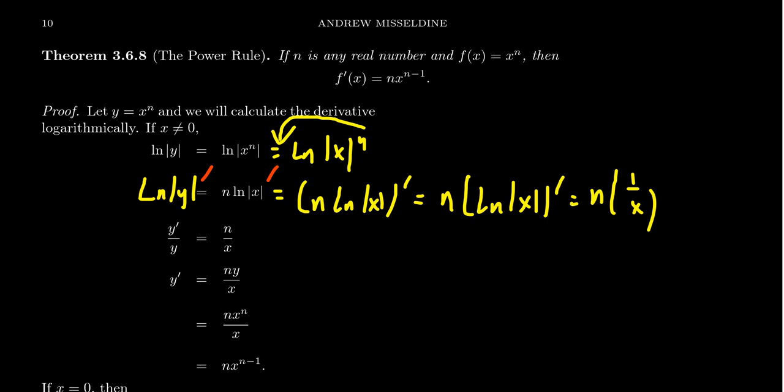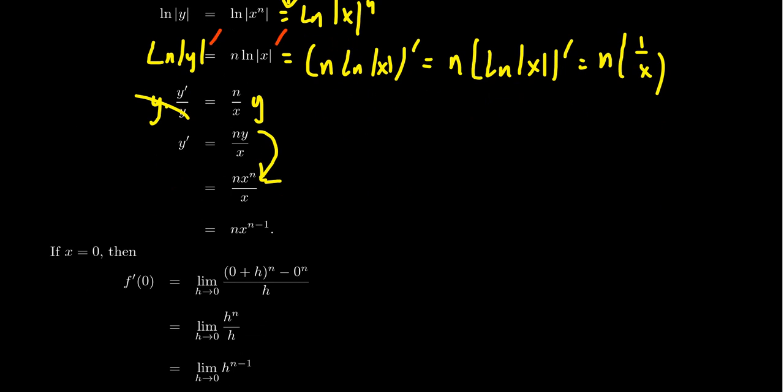Now, in order to get y prime, we have to solve for y. We're going to multiply both sides of the equation by y so that they cancel out on the left-hand side, so that means that the derivative of y will equal n y over x. But y is just the power function x to the n, so plug that in for y, we get n times x to the n over x. And therefore, if we subtract the powers, the power will lower by 1, and so we end up with n times x to the n minus 1. And that's the derivative.